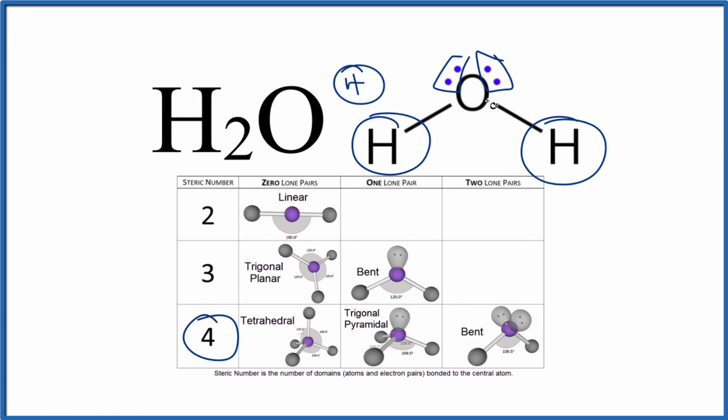And there are one, two lone pairs. So two lone pairs, steric number of four. We're going to have a bent molecular geometry. So you can use steric number to find the molecular geometry.